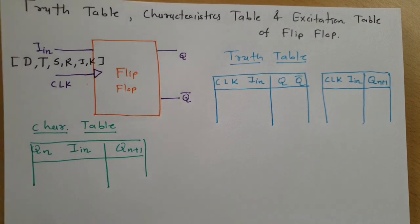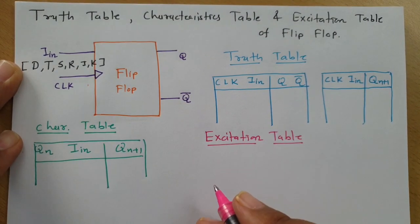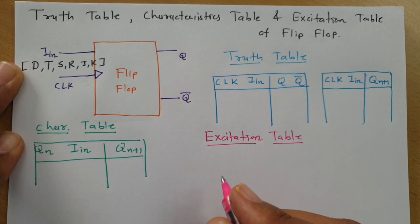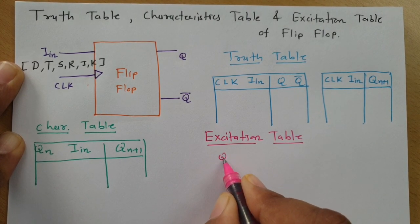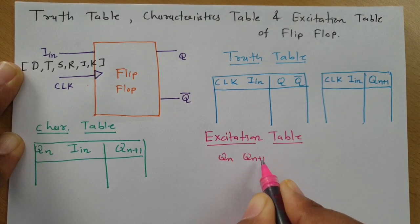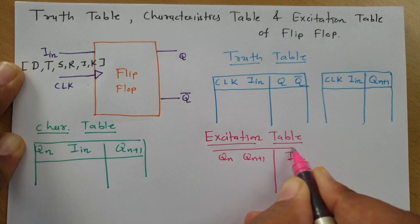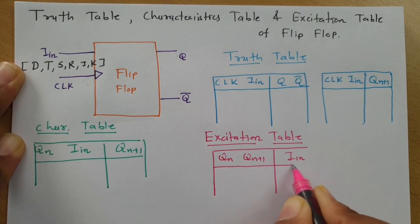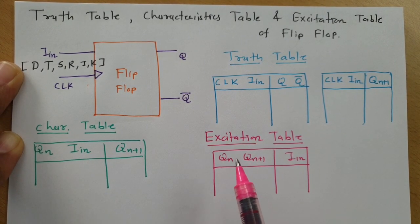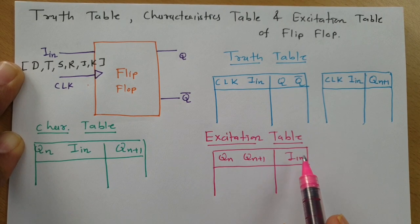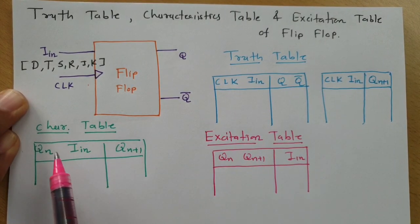Now I'll explain the third important table, which is the excitation table. In the excitation table, you will find a table that is between current state and next state with respect to input. So the excitation table is between current state and next state with respect to input.